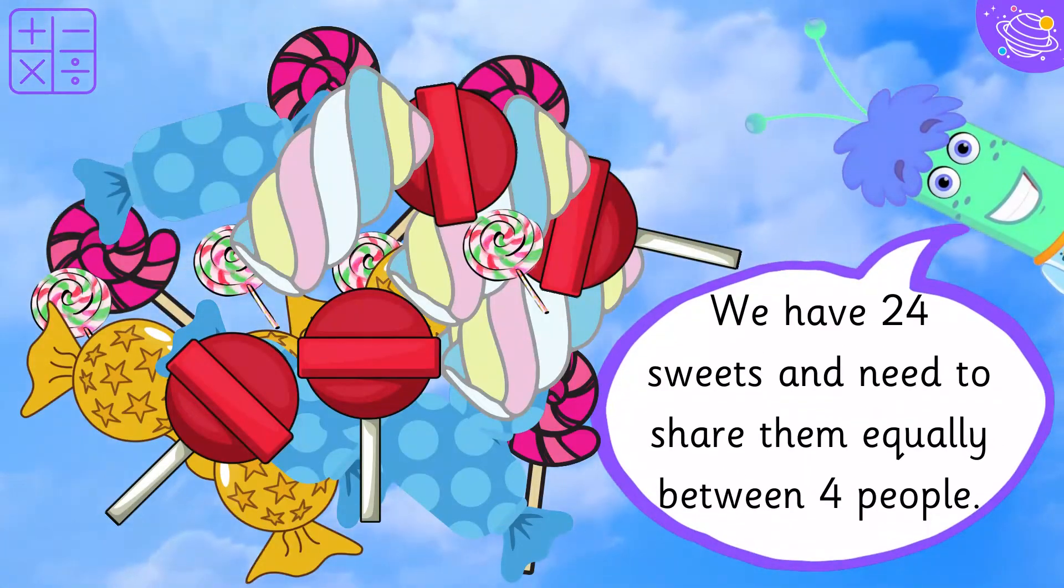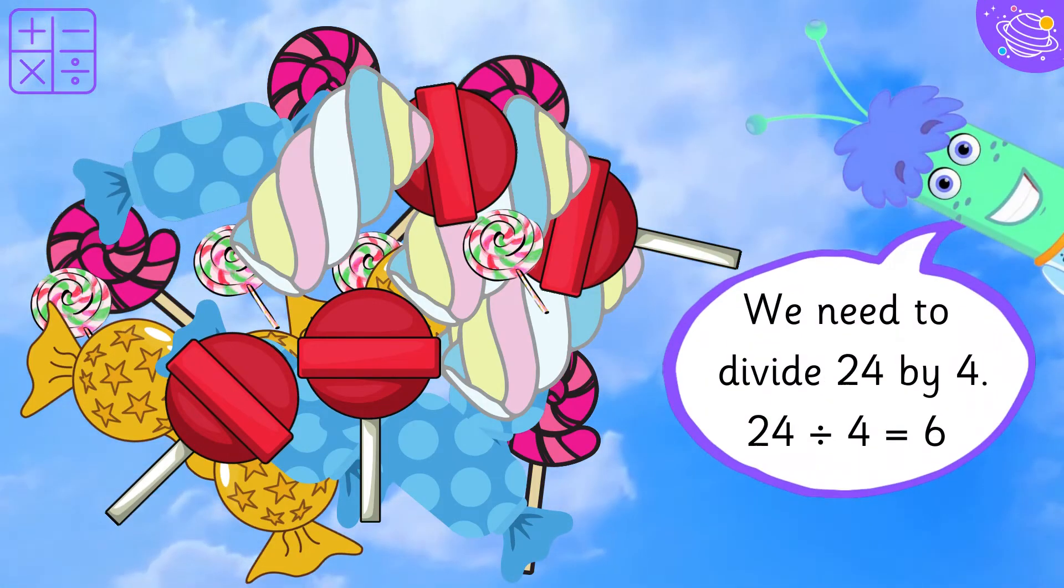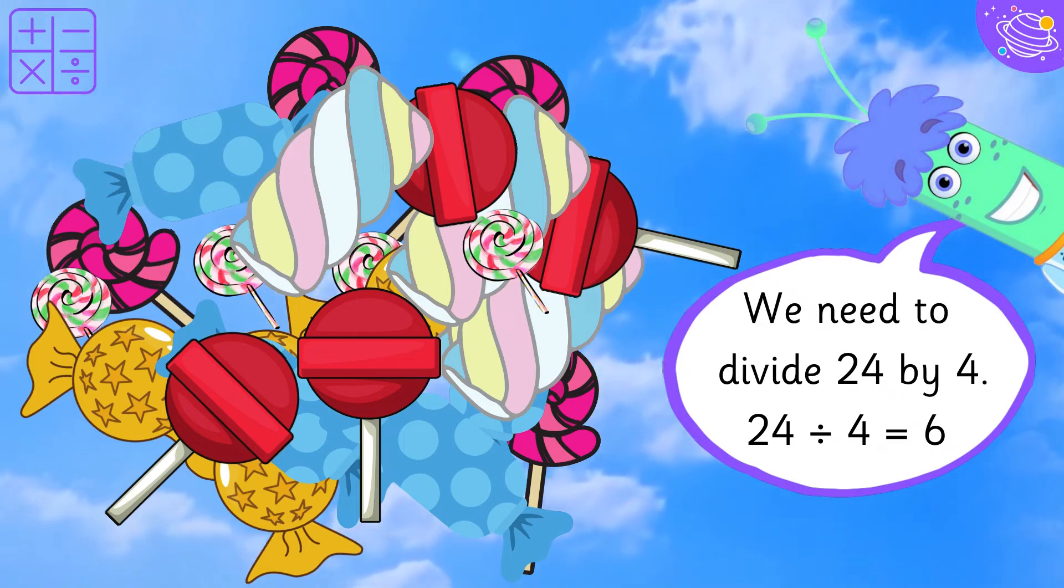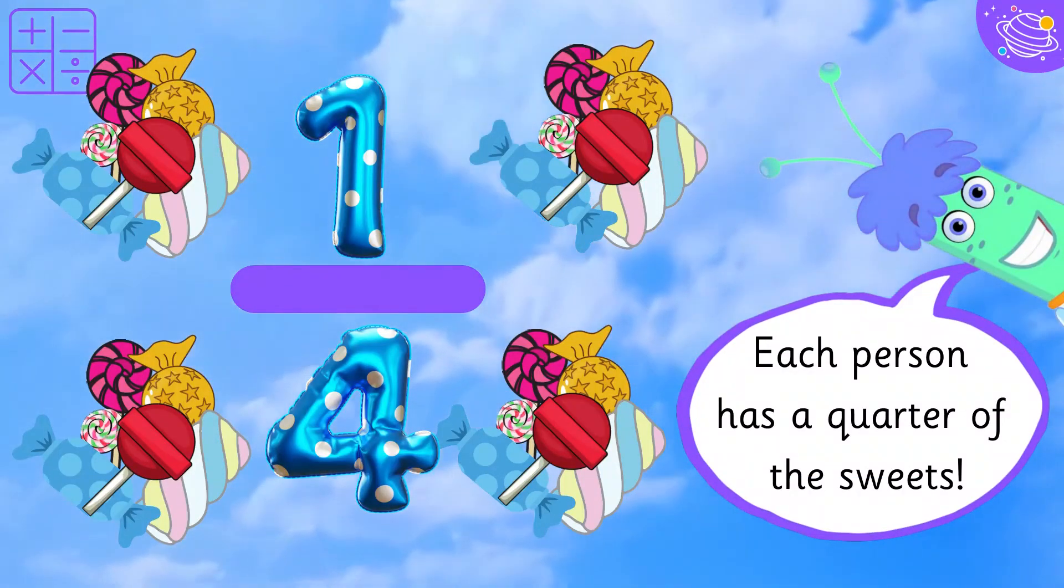We have twenty-four sweets and need to share them equally between four people. We need to divide twenty-four by four. Twenty-four divided by four equals six. Each person has a quarter of the sweets.